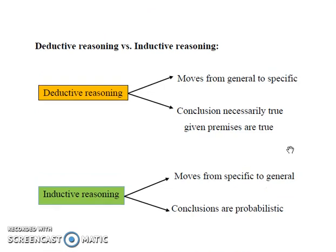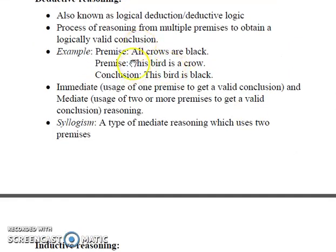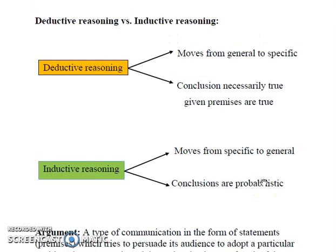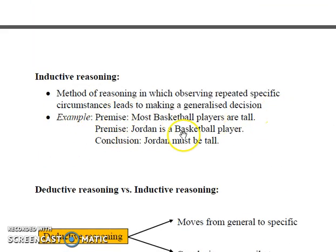The other main difference is in the nature of conclusion. In deductive reasoning, conclusions are necessarily true given that the premises are also true. Like here, assuming that these two premises are true, we know for sure that the conclusion is absolutely true. In inductive reasoning, conclusions are probabilistic even if the premises hold true. Although these two statements are true, we cannot infer correctly that Jordan must be tall — there are chances he might be short also. Hence, there is an element of probability involved in inductive reasoning.